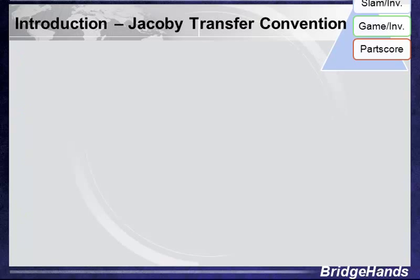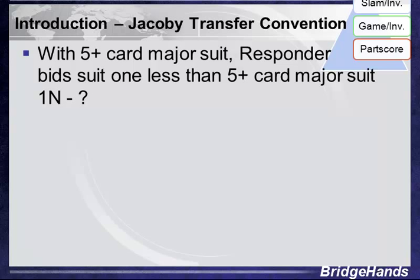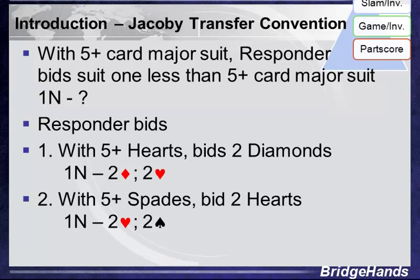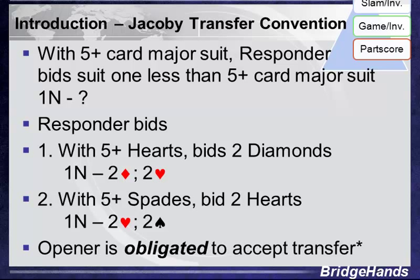Here's how Jacoby transfers work: partner opens one no trump; responder with a five-card major or longer bids one suit below that major. With a five-card or longer heart suit, responder bids two diamonds — auction goes one no trump, two diamonds, opener rebids two hearts. With five or more spades, responder bids two hearts — one less than the suit they want — and opener rebids two spades.